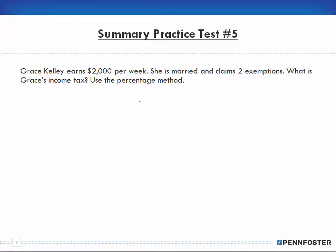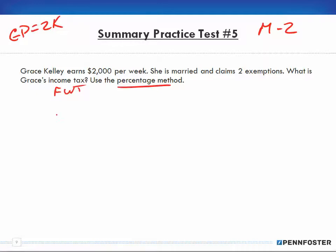So it says Grace Kelly earns $2,000 per week, so her gross pay is $2,000. She's married and claims two exemptions. What is her federal withholding tax? And it's asking us to use the percentage method.